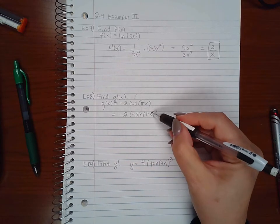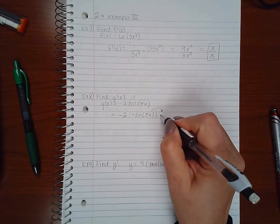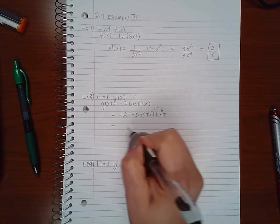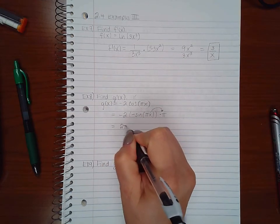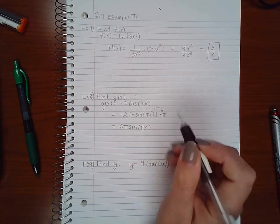But because that angle is not just an x, I do have to apply the chain rule. So I do have to multiply by pi. So when I multiply everything out I get a positive 2 pi sine of my angle pi over x.